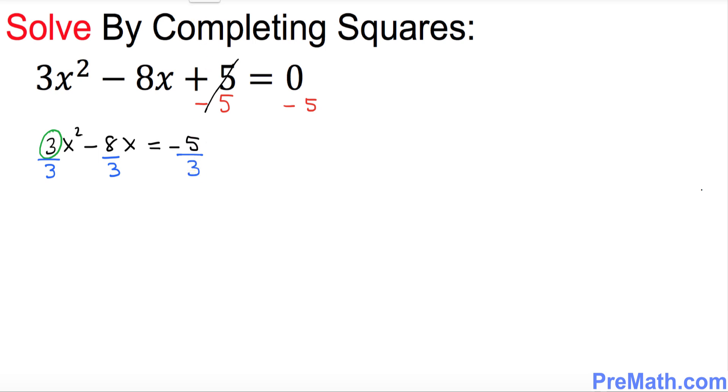So what we got over here is 3 over 3 becomes simply 1x² minus 8 over 3 x equals to negative 5 over 3.